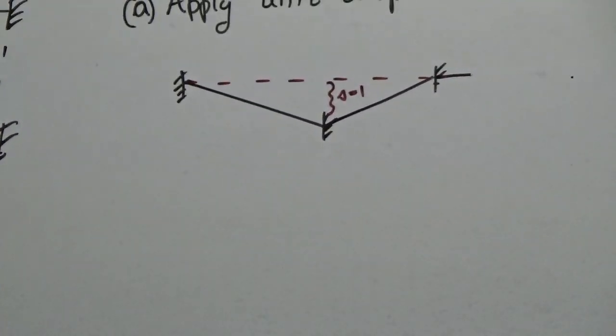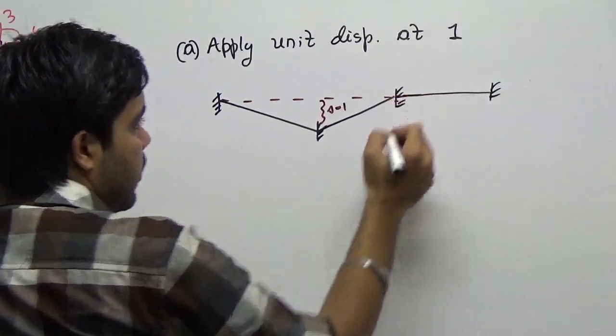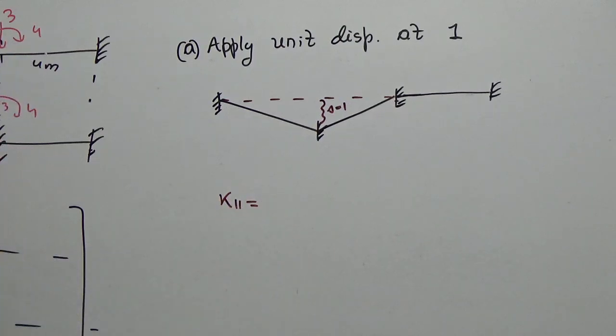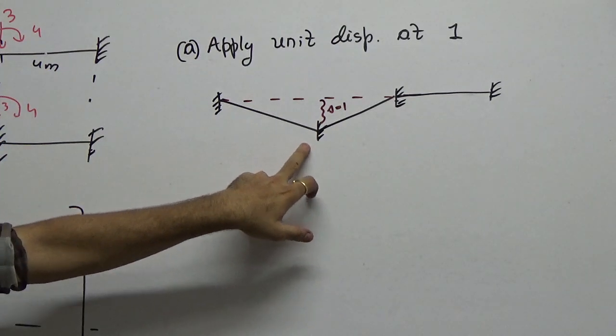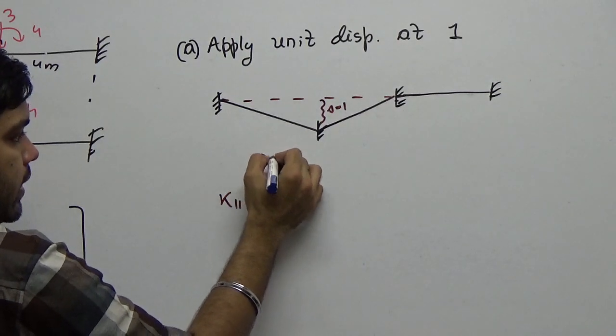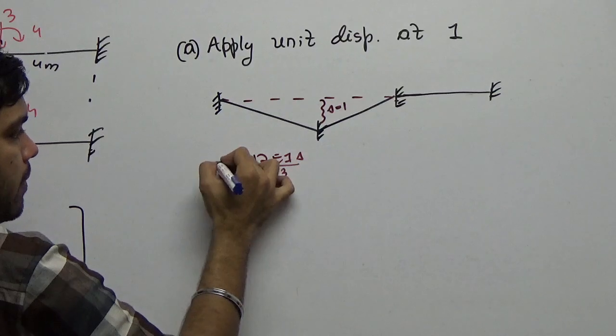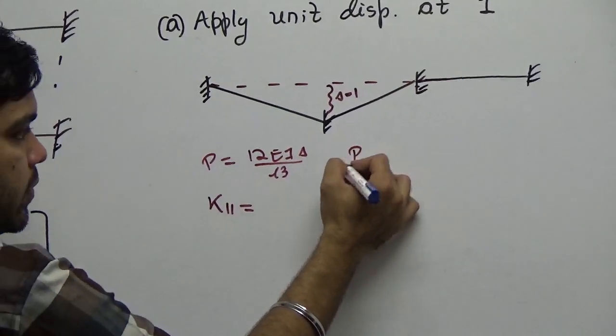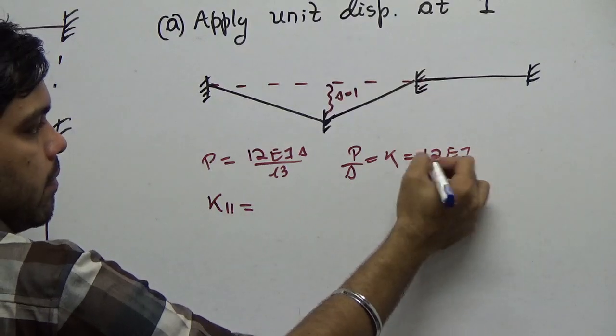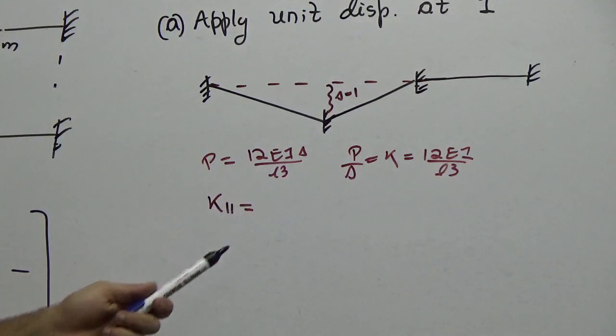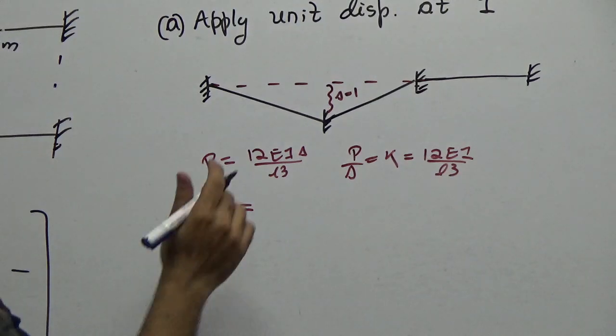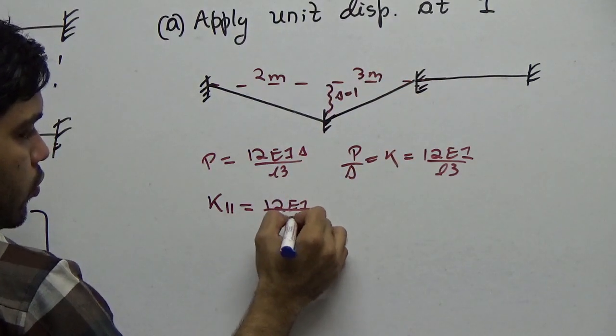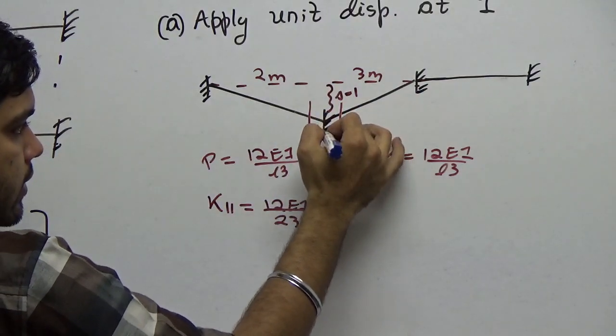If this is delta equal to 1, then what will be your k11? When the far end is fixed and the near end is given displacement, what is the formula we have seen? You have seen 12EI delta by L cubed. If you remember, this p was 12EI delta by L cubed. If I take delta here, what is p by delta? p by delta is k. So I can write k as 12EI by L cubed. That's what k is. So I will write k11 as, see, this end is 2 meter and this end is 3 meter.